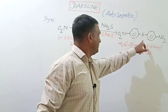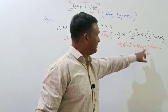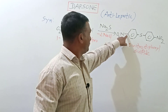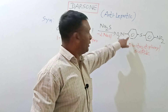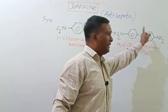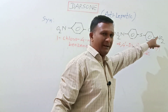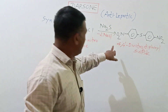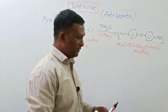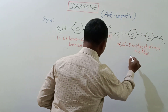This sulfide derivative is called 4,4'-dinitrodiphenyl sulfide. Here you can see that both the phenyl rings are attached with a sulfur, so it is called diphenyl sulfide. On this benzene ring at the fourth position we have a nitro group, and on the second benzene ring at the 4' position we have the second nitro group, that's why it is called 4,4'-dinitrodiphenyl sulfide.